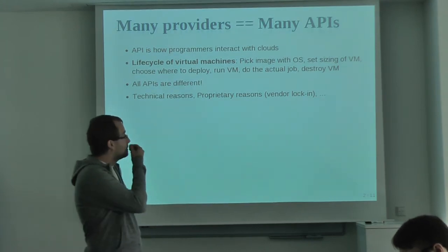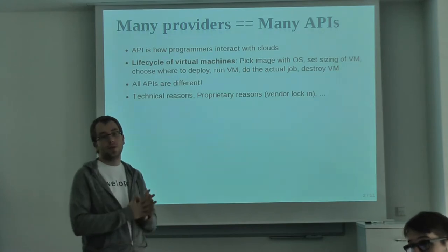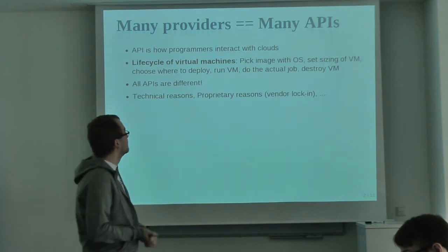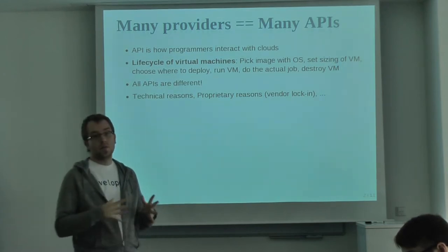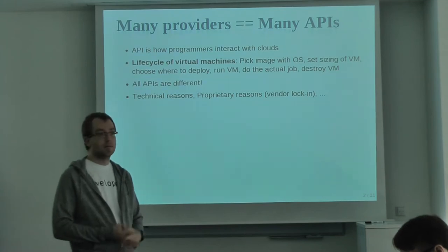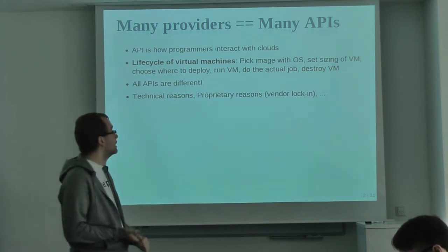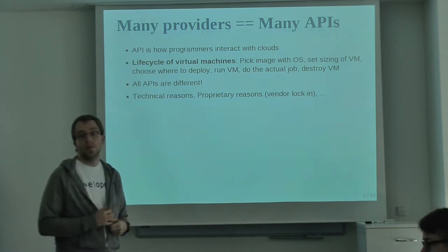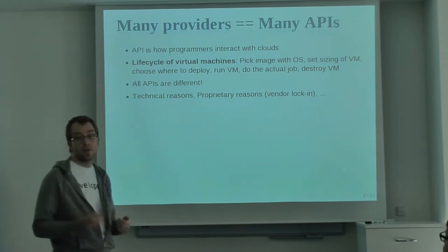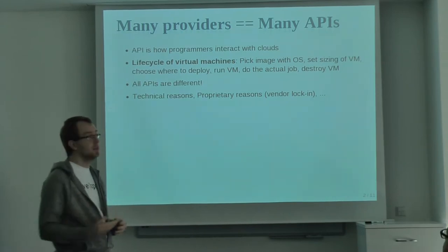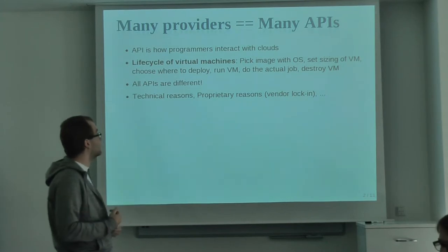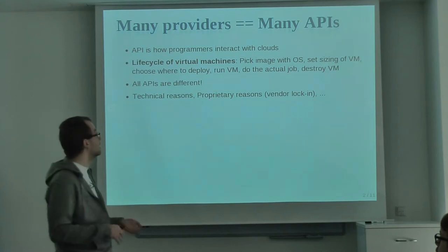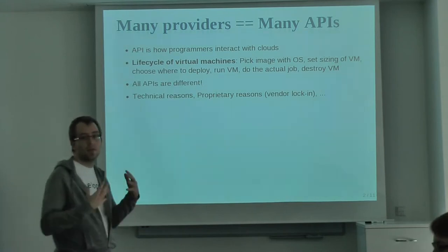With the API, you can manage the full lifecycle of the virtual machine. You can create a virtual machine by picking the image that contains the root disk, then set the sizing of the virtual machine, then choose where the machine will be deployed — a geographical region, a data center, or a cluster. Then you run the VM, it does the actual job, some processing, and then you destroy the VM. That's the cloud thing.